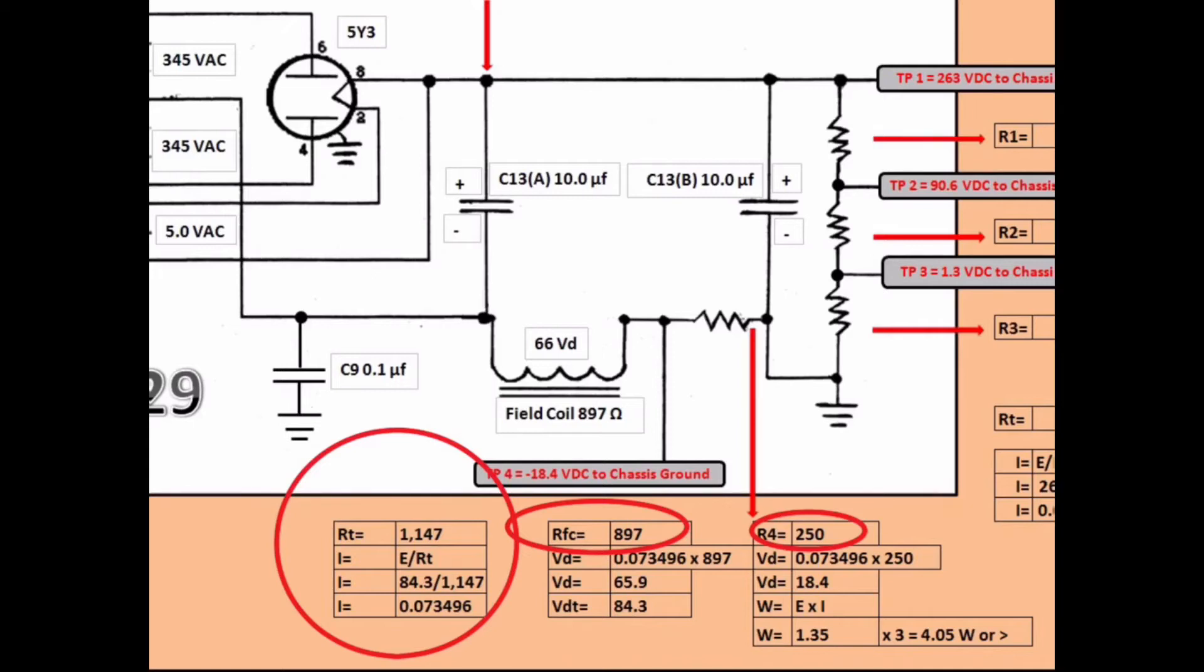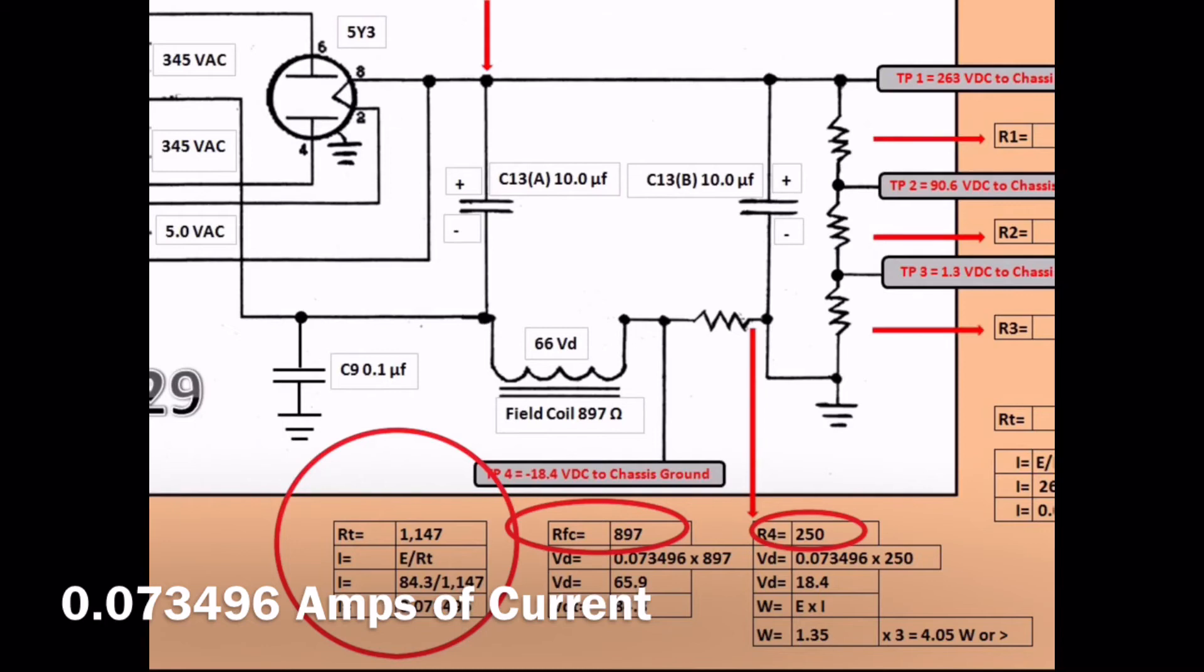I can calculate my current taking the formula of my voltage, which is represented by E divided by RT. That gives me 84.3 as my total voltage drop across both sections, divided by 1147, which was the total resistance. You can see there I'm about 73.4 milliamps, or 0.073496 milliamps of current.